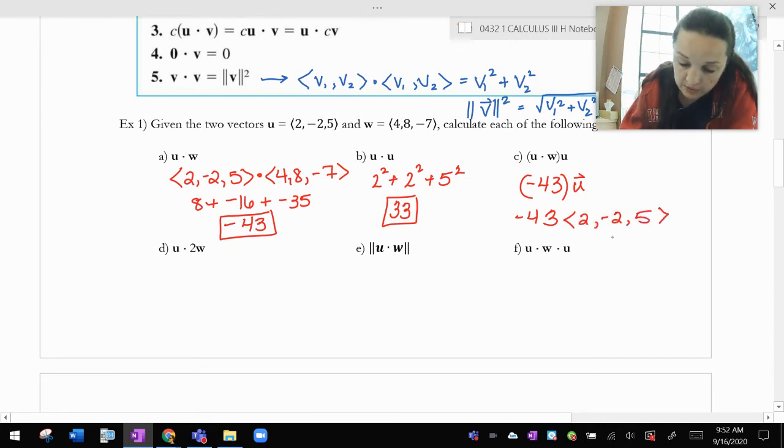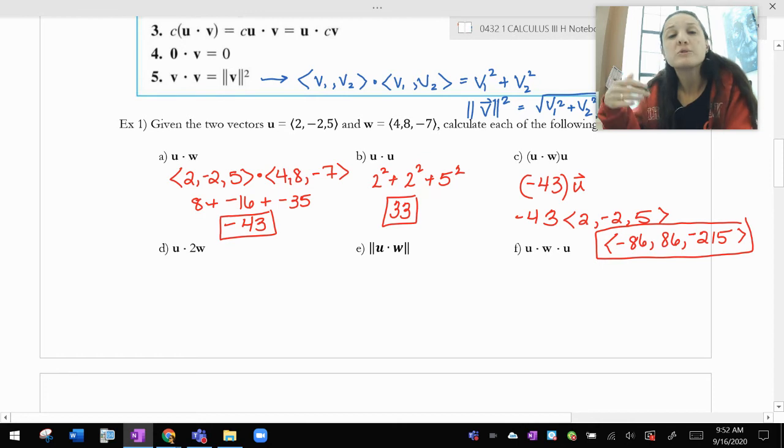So this is just going to be negative 43 times regular multiplication 2, negative 2, 5, which gets me a bigger vector, which is going to be what? Negative 86, positive 86, negative 215. Yeah, I think so. So be aware of when you think you're dotting and when you think you're multiplying.